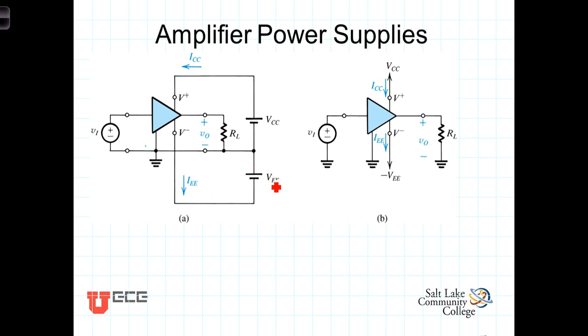So we don't know what's inside here. There may or may not be bipolar junction transistors inside that amplifier, but we still sometimes refer to the power supplies as referring to the collector and emitter. But that's just an aside.